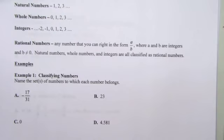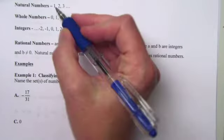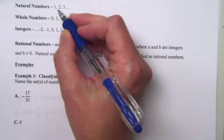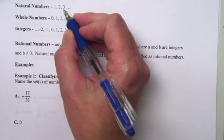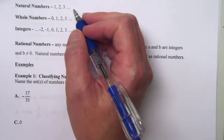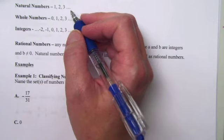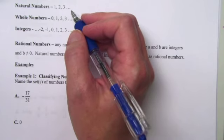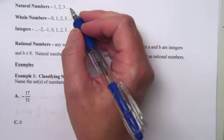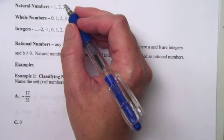We're going to start off with our natural numbers. Our natural numbers, you just start counting off 1, 2, 3, etc. These are the numbers you started off with when you were really little in kindergarten and you had to first start counting. So these are what are called your natural numbers.